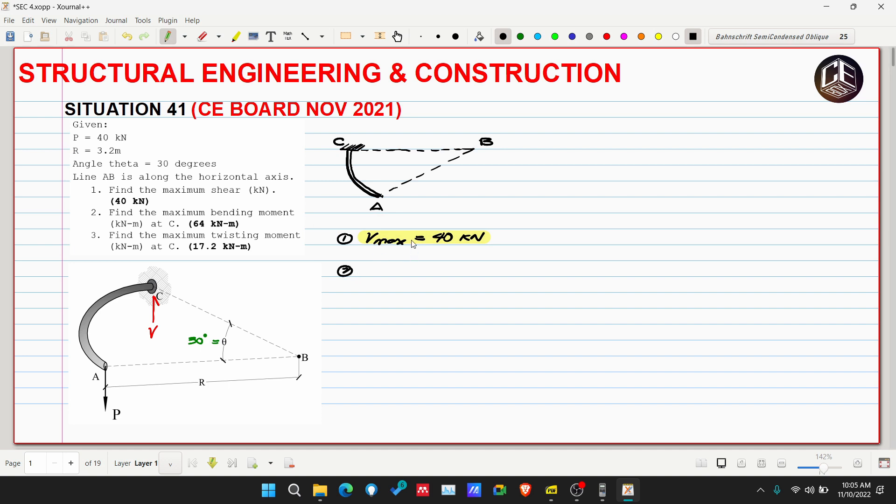Number two: find the maximum bending moment in kilonewton meters at point C. This is a bit tricky if the student doesn't understand the difference between bending and twisting. If you say twisting, it will rotate the structure or member, while for bending, it will bend it. Here, when we're looking at this point of view, the P will bend this member. But when we're looking here, it will rotate, it will twist our rad. So if we're finding bending, we look here.